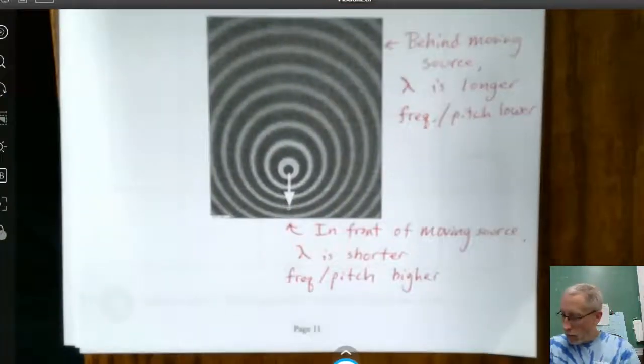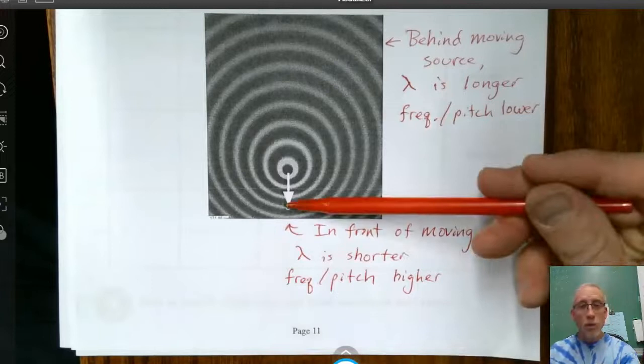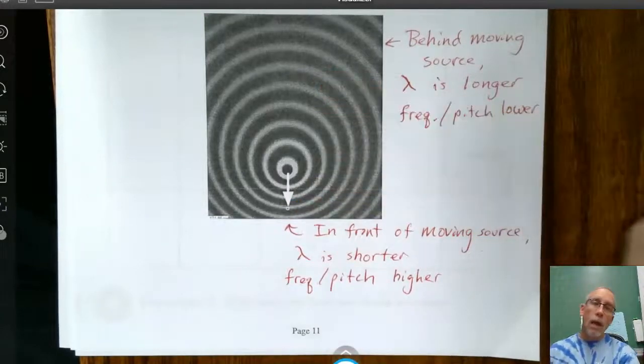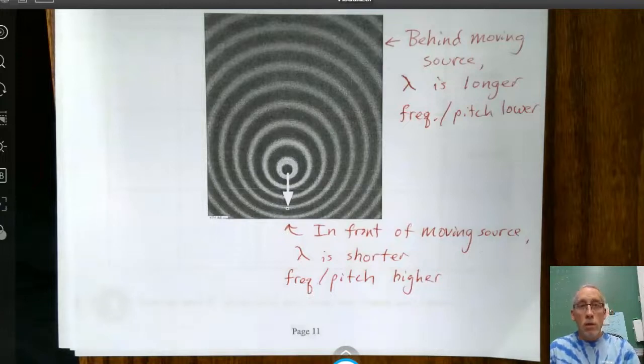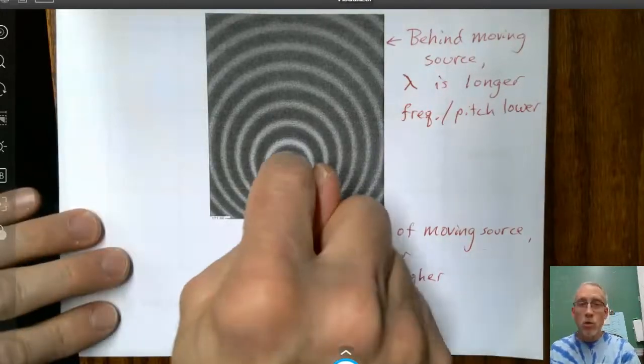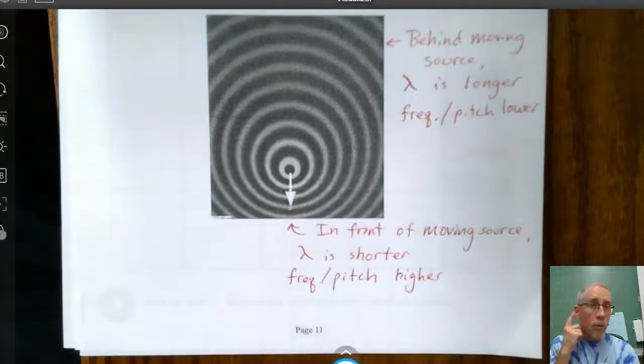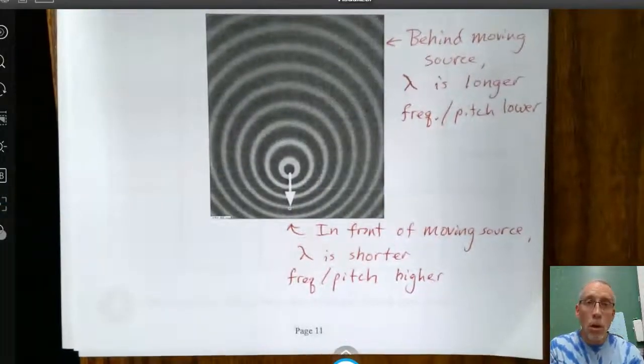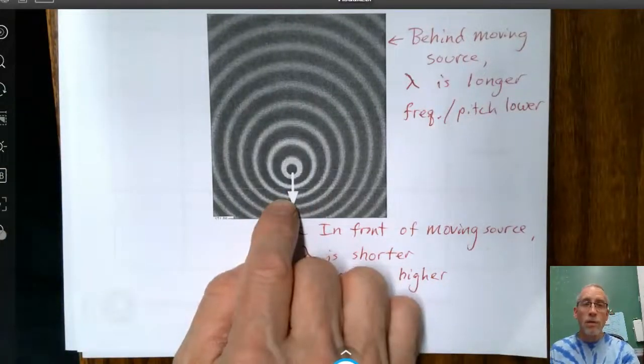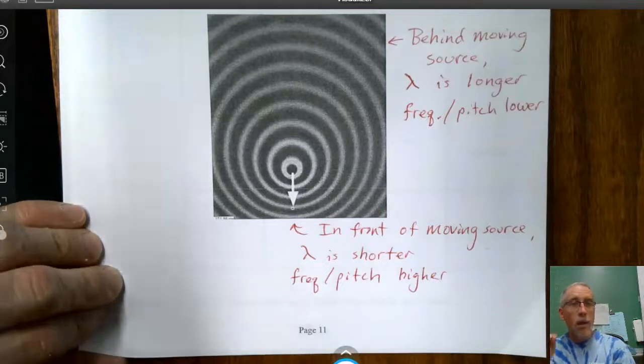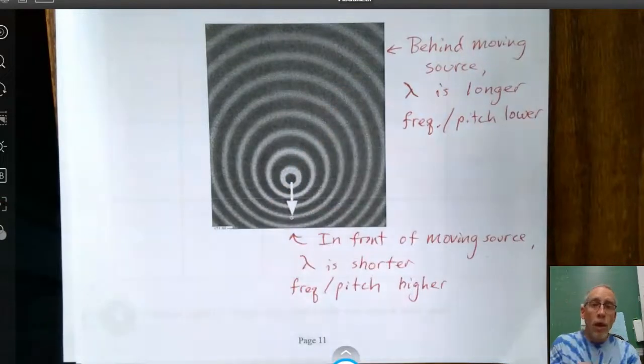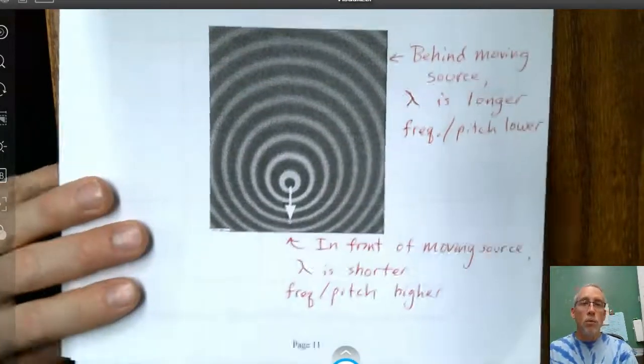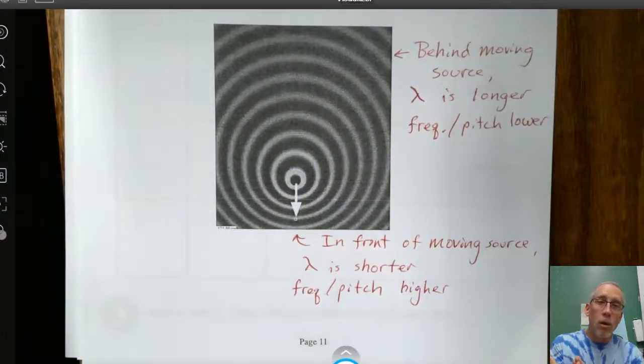So higher pitches in front of the motion, lower pitches behind. I'm not going to get into the details too much at this level class, but this also would work if instead of moving the source of the sound, if you move yourself. If your ear moves towards a siren or towards a car horn, you also pass more waves every second, that would make the pitch sound higher than it actually is. And as you pass by it and you're going away from it, it would just be like you being behind a moving source.